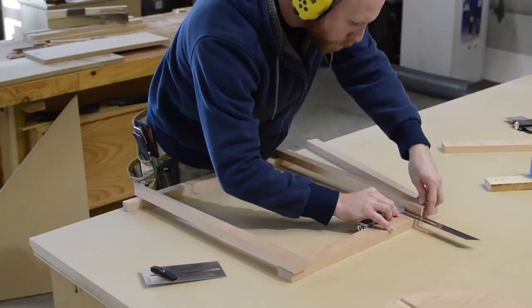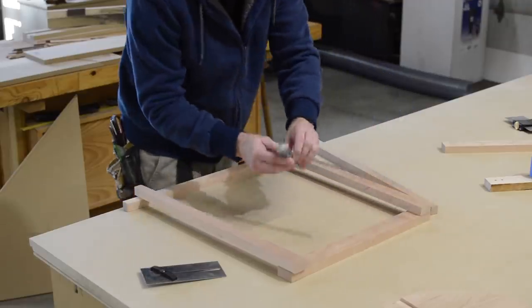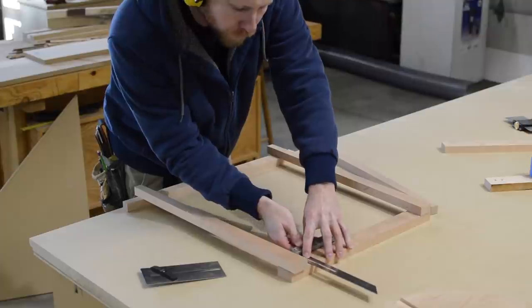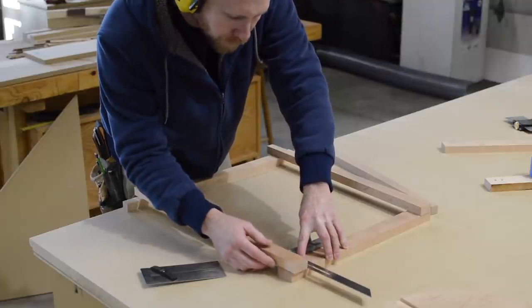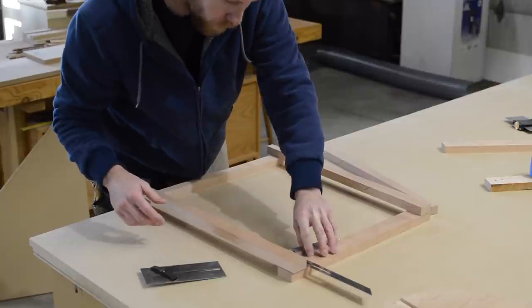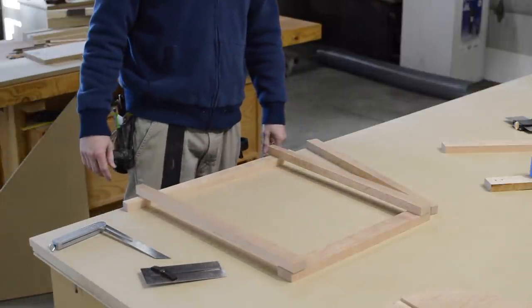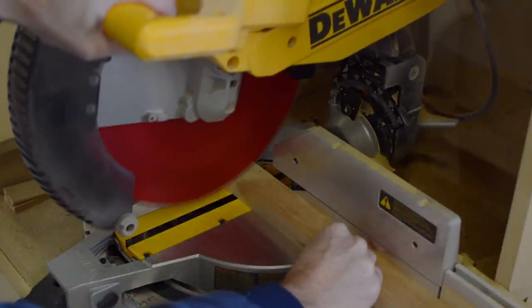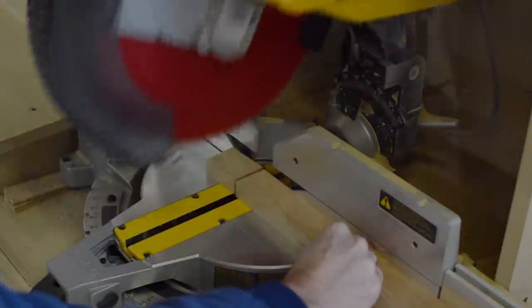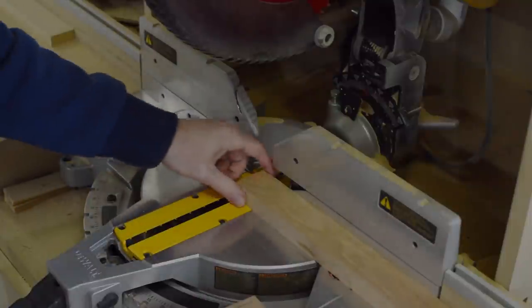Here I'm just working on the splay angle. The taper on the legs is about one and a half degrees. I end up going with a two degree splay angle, so this means the outside of the legs are splayed open about a half a degree. I'm not too concerned with accuracy, so I just chop this angle at the chop saw.